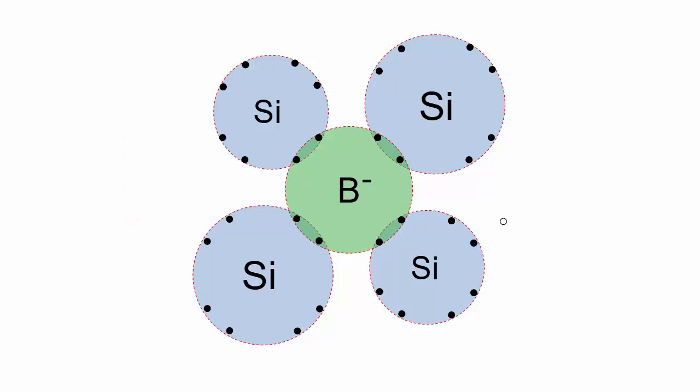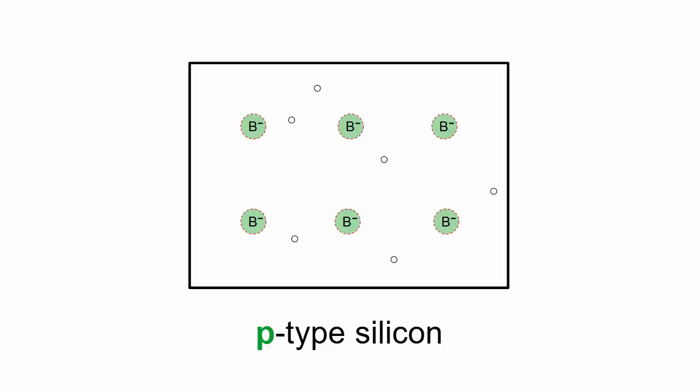Boron is called an acceptor because it accepts an electron from an adjacent silicon atom, producing a mobile hole. Silicon with a little bit of boron mixed in is called P-type silicon because it contains positively charged mobile particles that can carry an electric current.